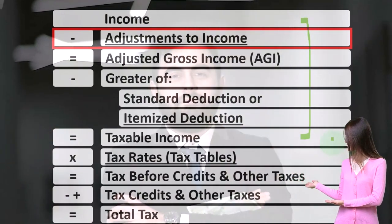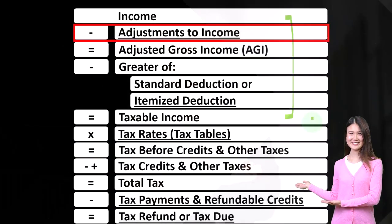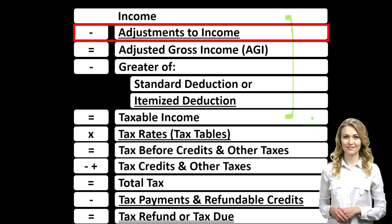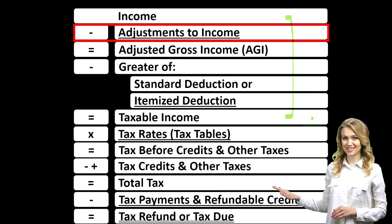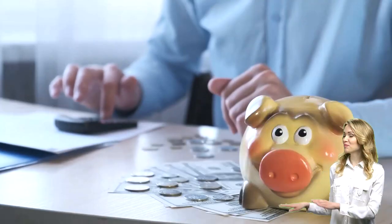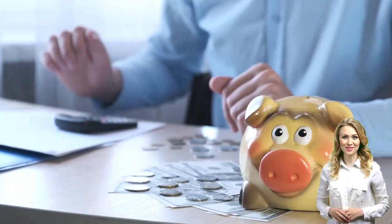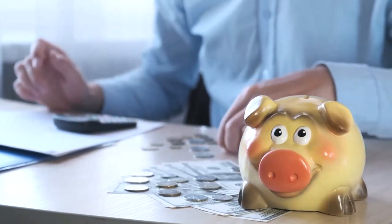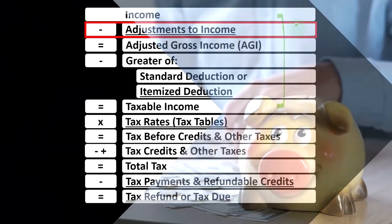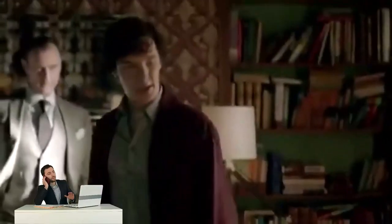The objective is flipped on its head — we want taxable income as low as possible, as opposed to normally where we want net income as high as possible. So we looked at the income line in prior sections; now we're focusing on the adjustments to income, which you can think of as kind of like a deduction.